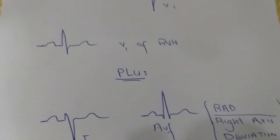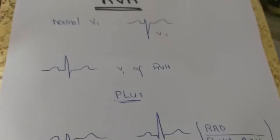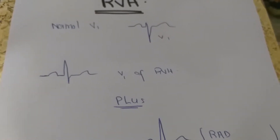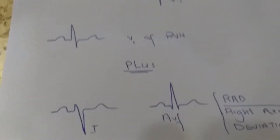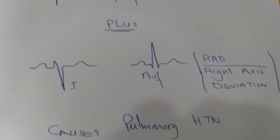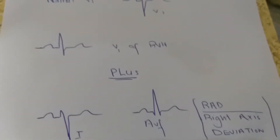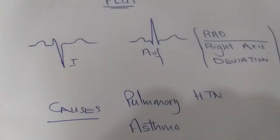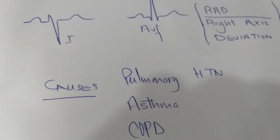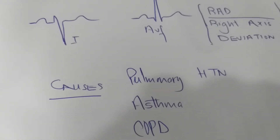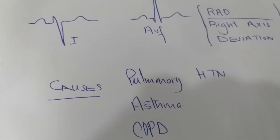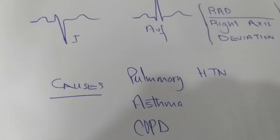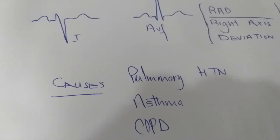So if these two things are present — a tall R wave in lead V1 and right axis deviation — we call it right ventricular hypertrophy. Patients who have this problem are those who develop pulmonary hypertension, for example asthmatics, COPD patients, and those with primary pulmonary hypertension — these are all examples of right ventricular hypertrophy.